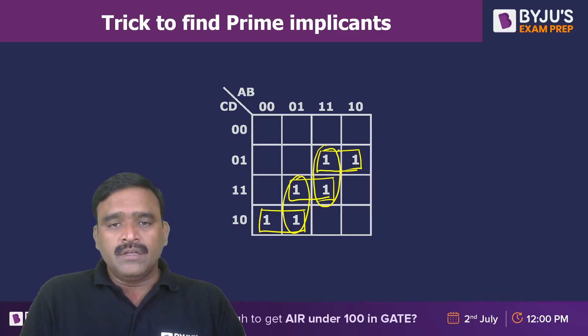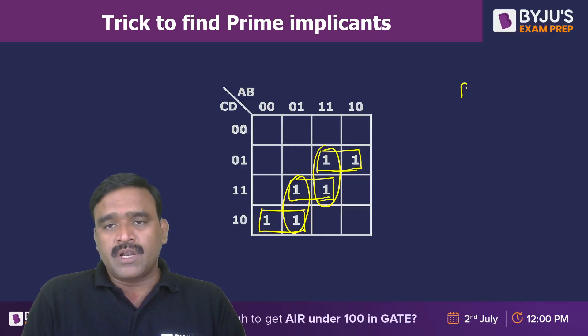So total: one, two, three, four, five prime implicants. The number of prime implicants is equal to five.